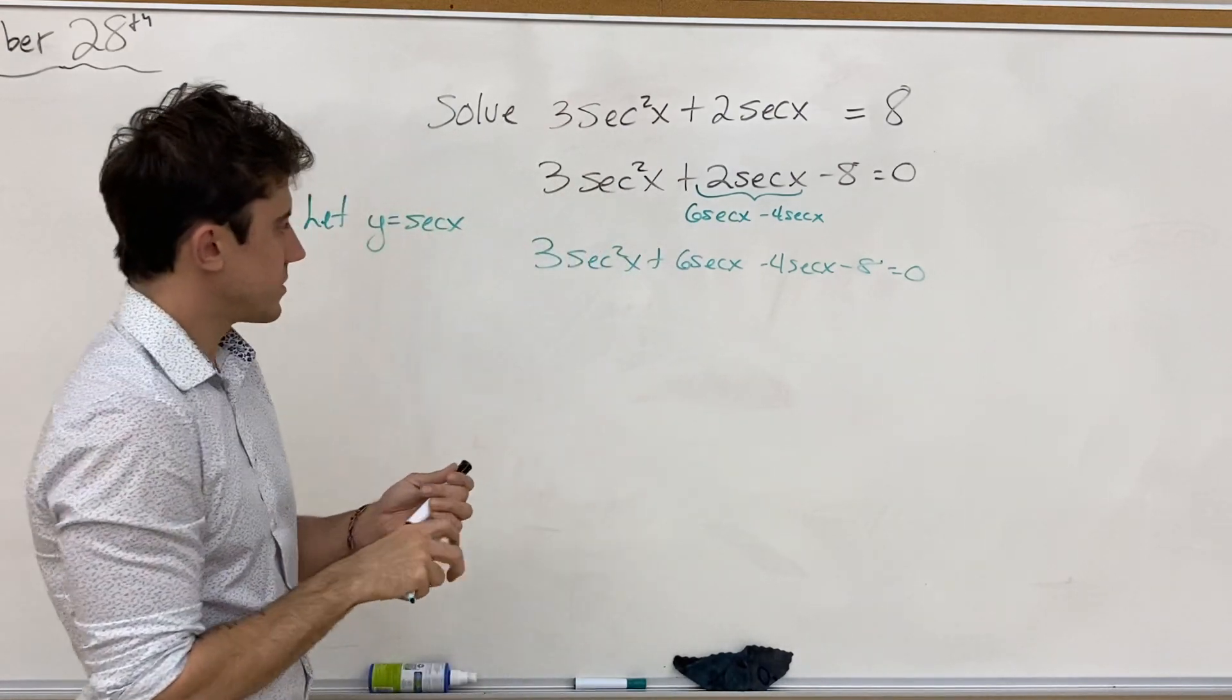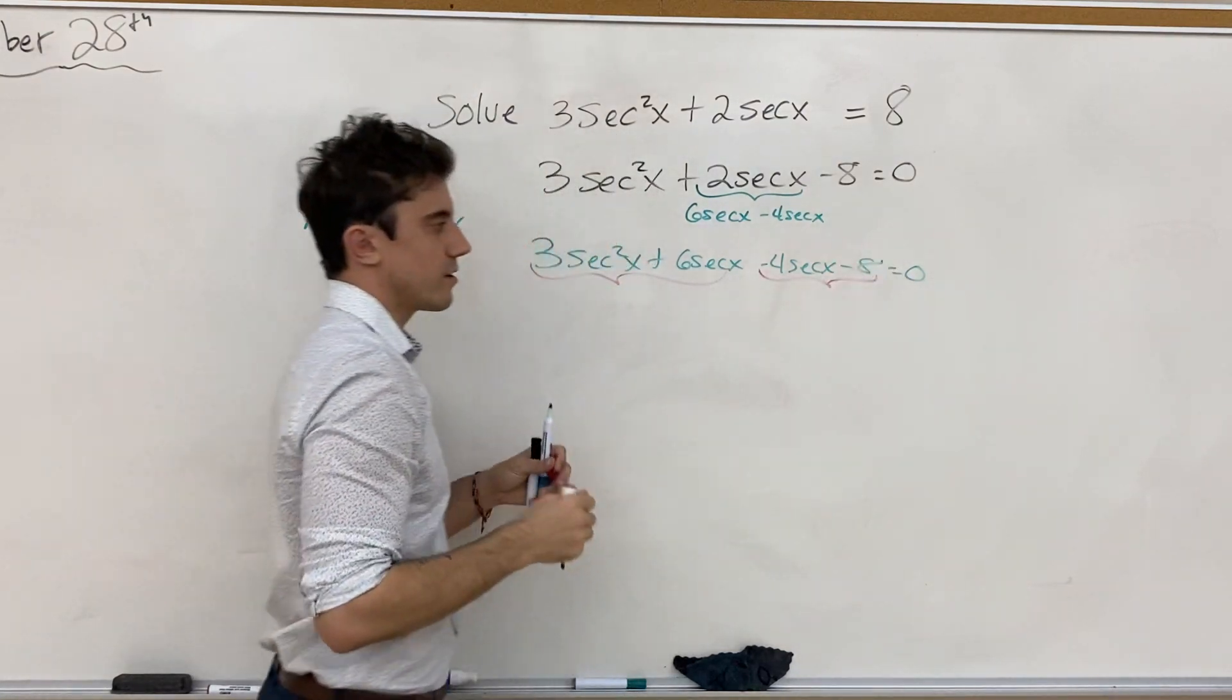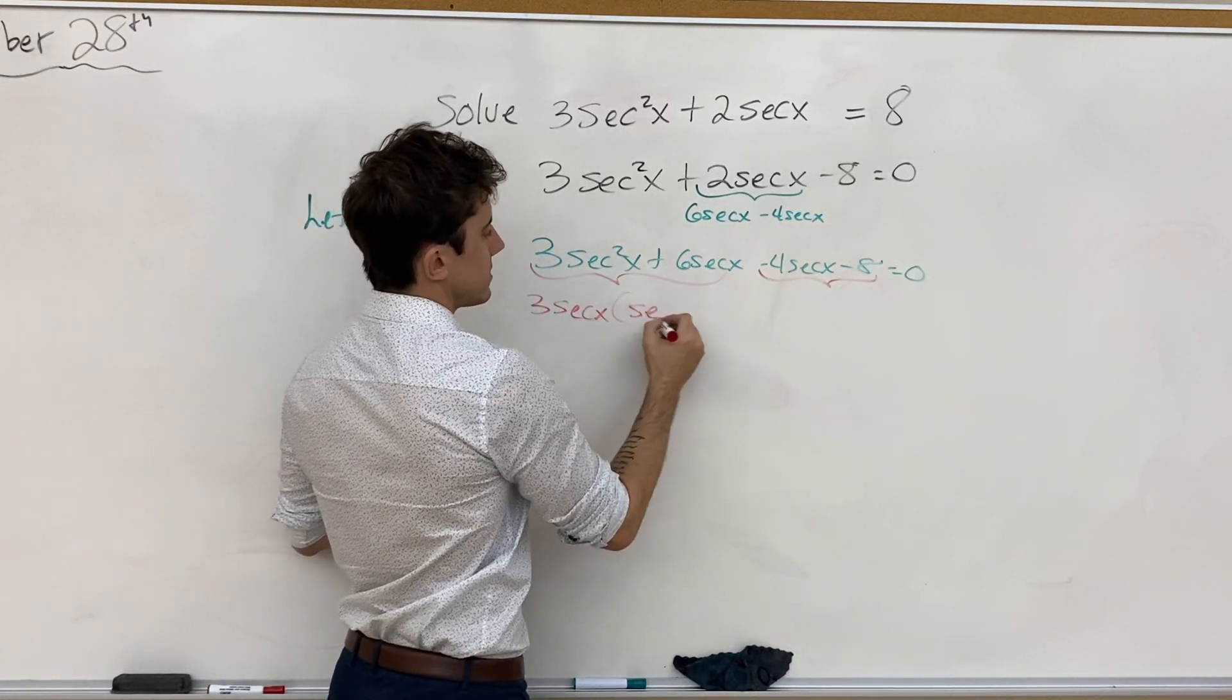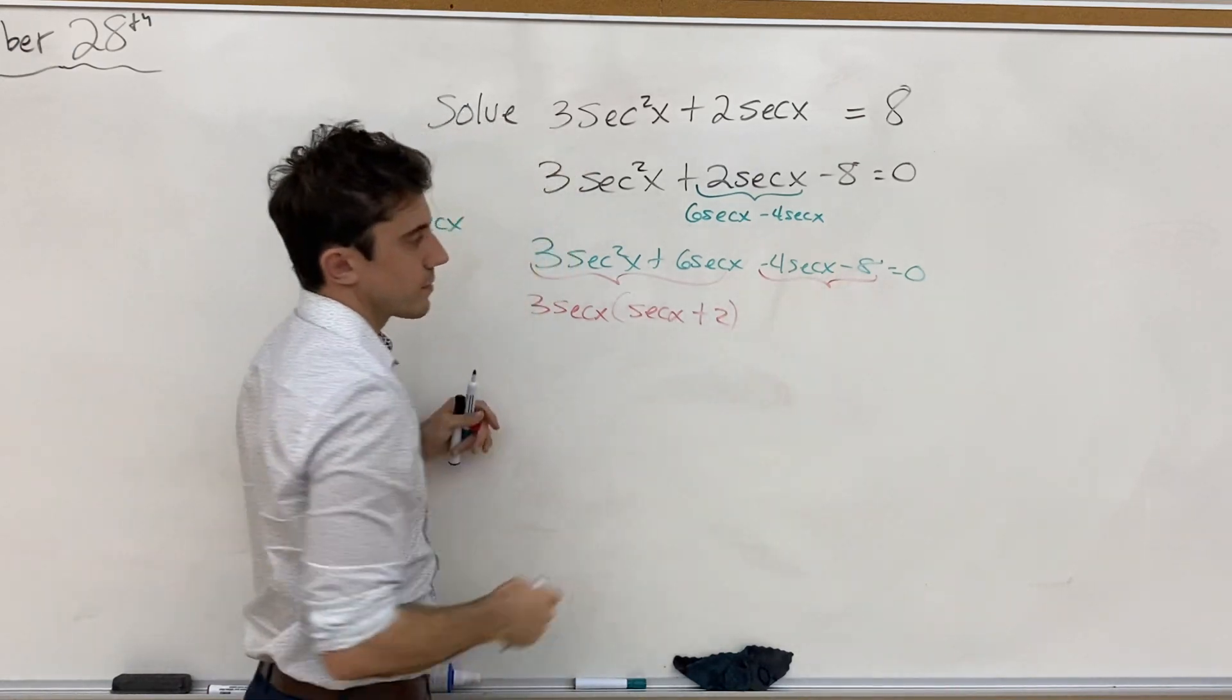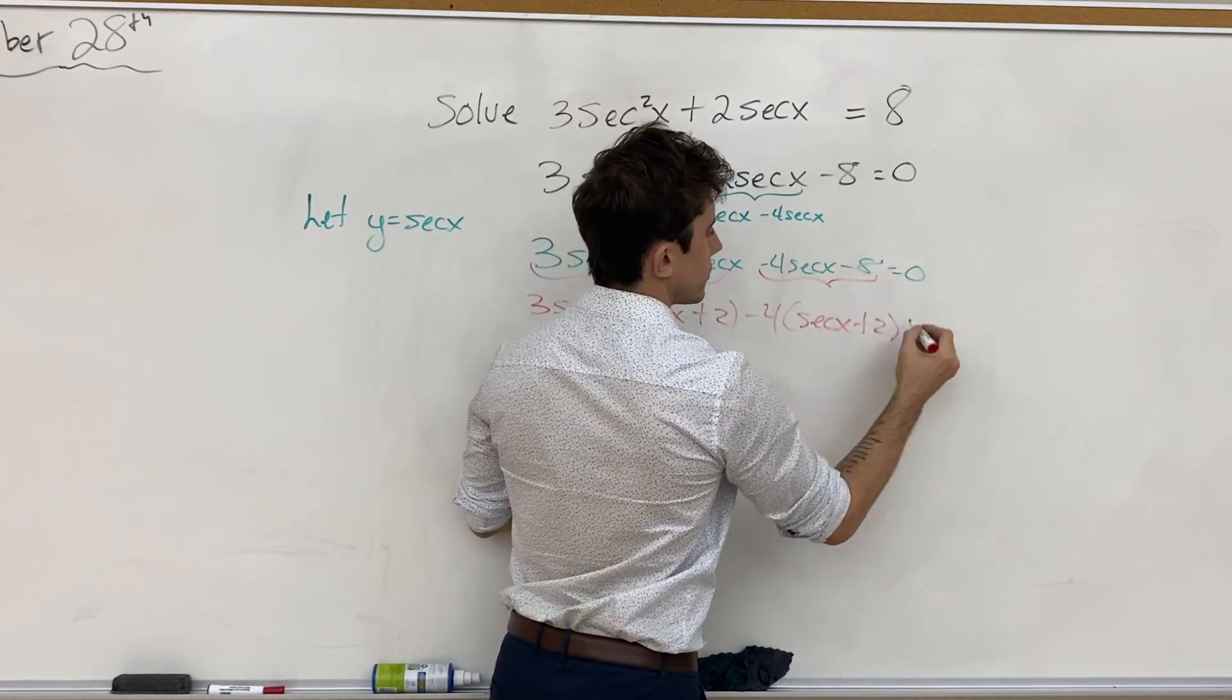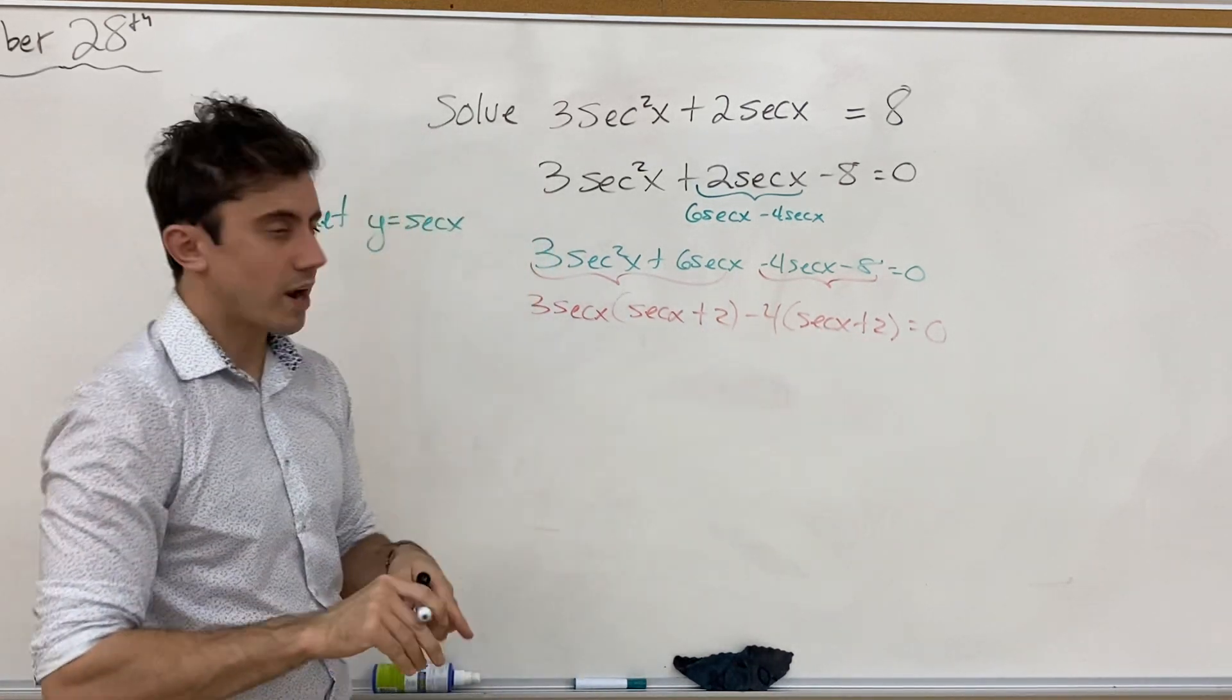Now we're in position to factor our first two terms and factor our last two terms. And so we can pull out of the first two a 3 secant x, leaving a secant x plus 2 inside the bracket. And from the last two terms, you'll see that we factor out negative 4, leaving us with, again, secant x plus 2 inside the bracket. That's a really good sign that we're on the right track because we have the exact same expression inside of both brackets.